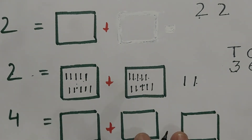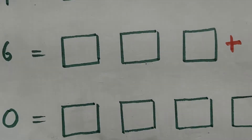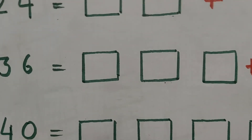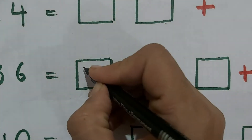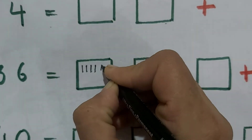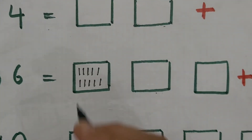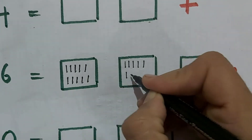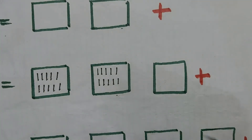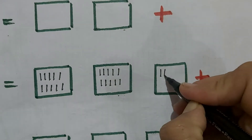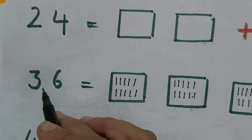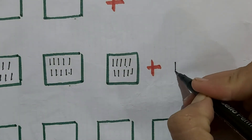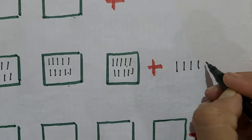Next number we had counted is 36. For 36, how many bundles? 3 bundles. For 3 bundles we will make 3 squares, and inside each square we will draw 10 lines. Bundle 1: 1 through 10. Bundle 2: 1 through 10. Bundle 3: 1 through 10. So 1 ten, 2 ten, 3 ten — 3 tens. How many ones? 6. So we will draw 6 lines: 1, 2, 3, 4, 5, 6.